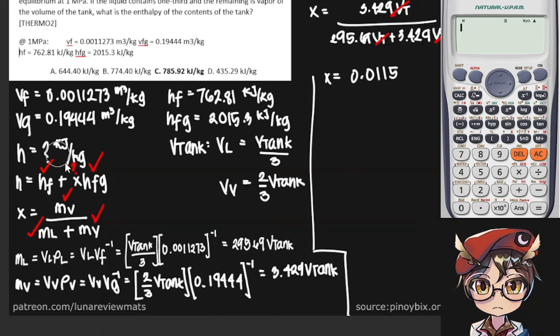And now we can finally find the enthalpy of the contents of our tank. So there's no space, I'm going to put this in the calculator directly. H sub f is 762.81 plus the quality of our steam multiplied by Hfg, 2015.3, equals 785.99 kilojoules per kilogram. Closest answer is C. So this is our final answer.